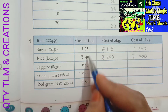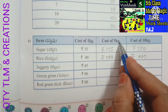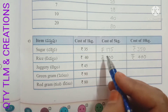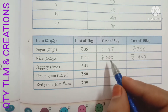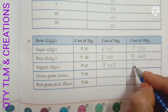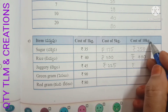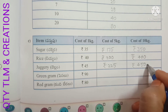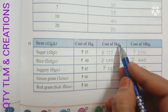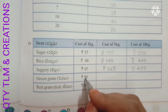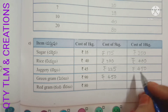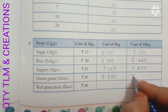Next: jaggery. Cost of 1 kg equals 45 rupees. Cost of 5 kg: 45 into 5 equals 225 rupees. Cost of 10 kg: 45 into 10 equals 450 rupees. Next: green gram. Cost of 1 kg equals 90 rupees. Cost of 5 kg: 90 into 5 equals 450 rupees. Cost of 10 kg: 90 into 10 equals 900 rupees.